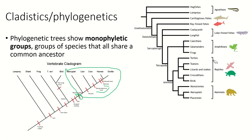If we look at the group of amphibians, the amphibians by themselves are a monophyletic group. But if we wanted to look at the amphibians and the reptiles together, that would not be a monophyletic group because the common ancestor of all of those is further back, and the monophyletic group would have to include the mammals as well.